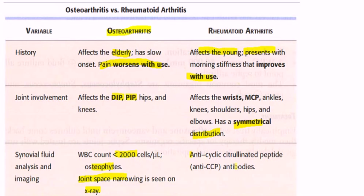In rheumatoid arthritis, anti-cyclic citrullinated peptide (anti-CCP) antibodies and a positive rheumatoid factor are seen. The seronegative arthritides — which are rheumatoid factor negative — include ankylosing spondylitis (HLA-B27 positive), reactive arthritis, psoriatic arthritis, and enteropathic arthritis associated with inflammatory bowel disease.